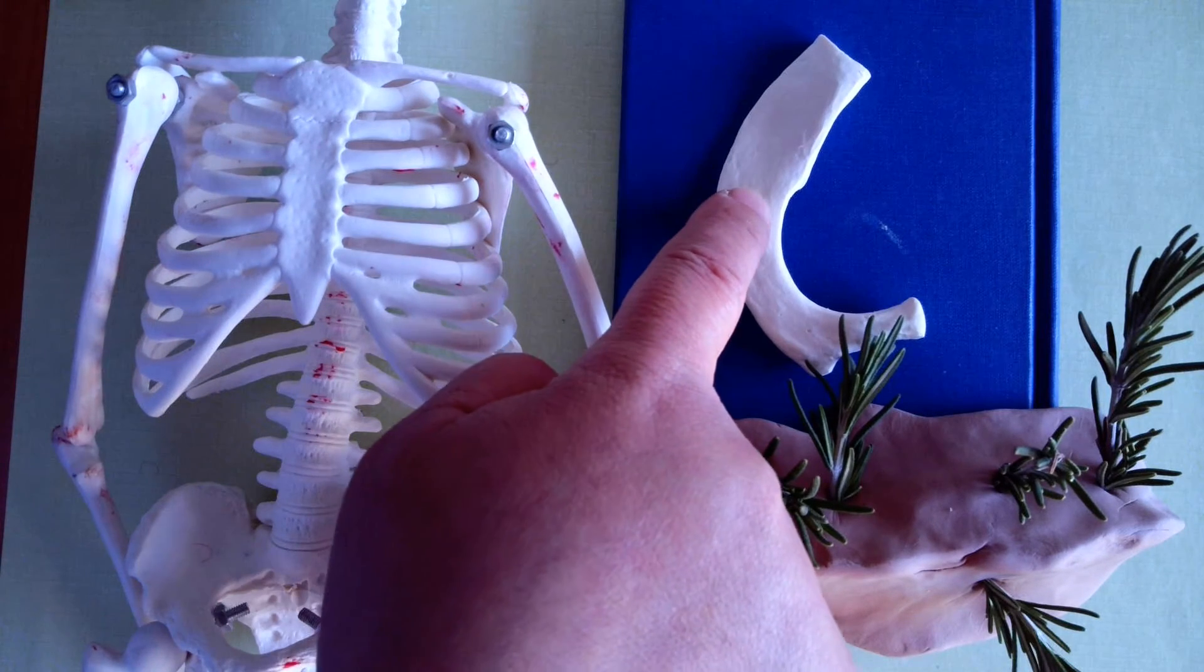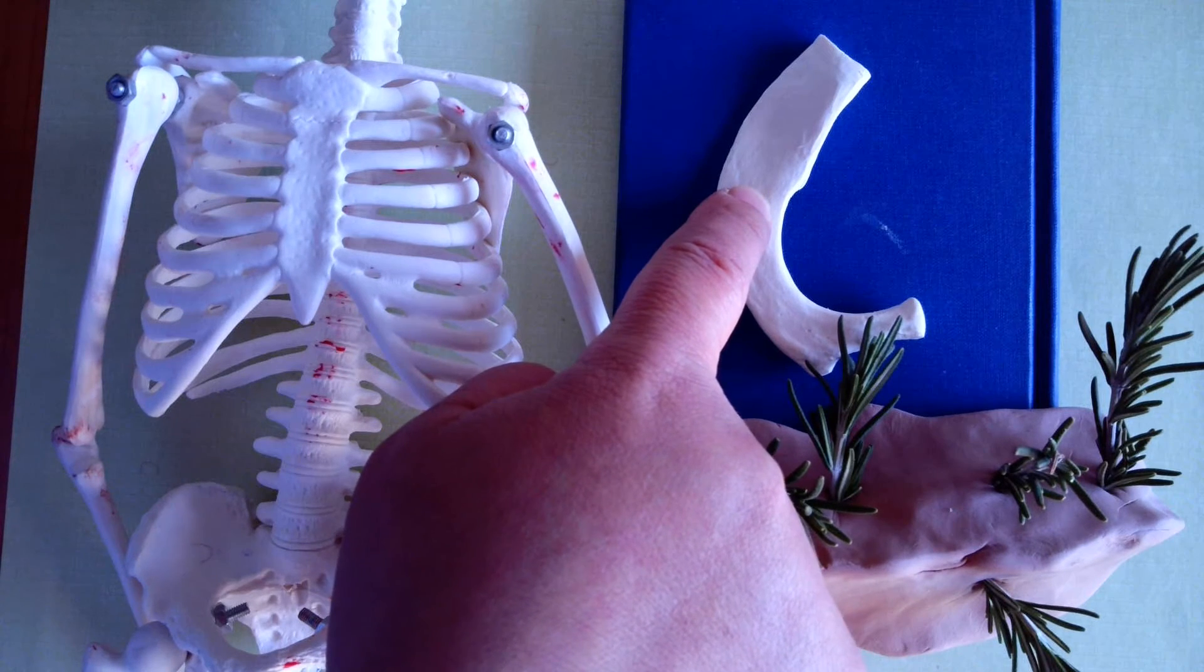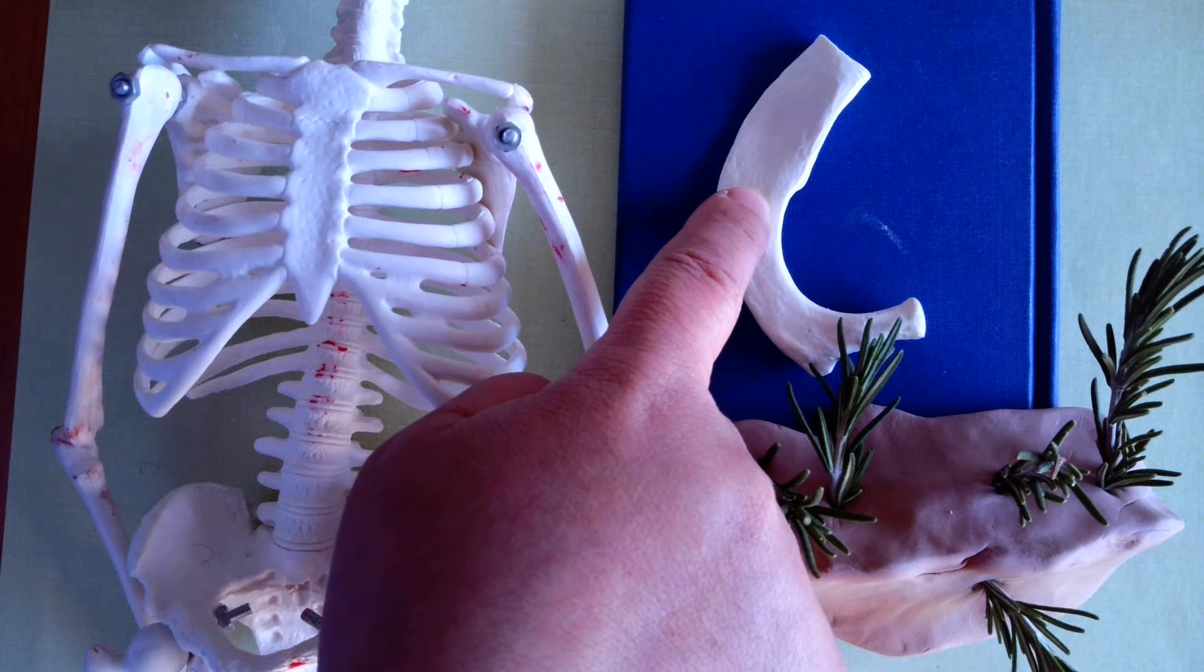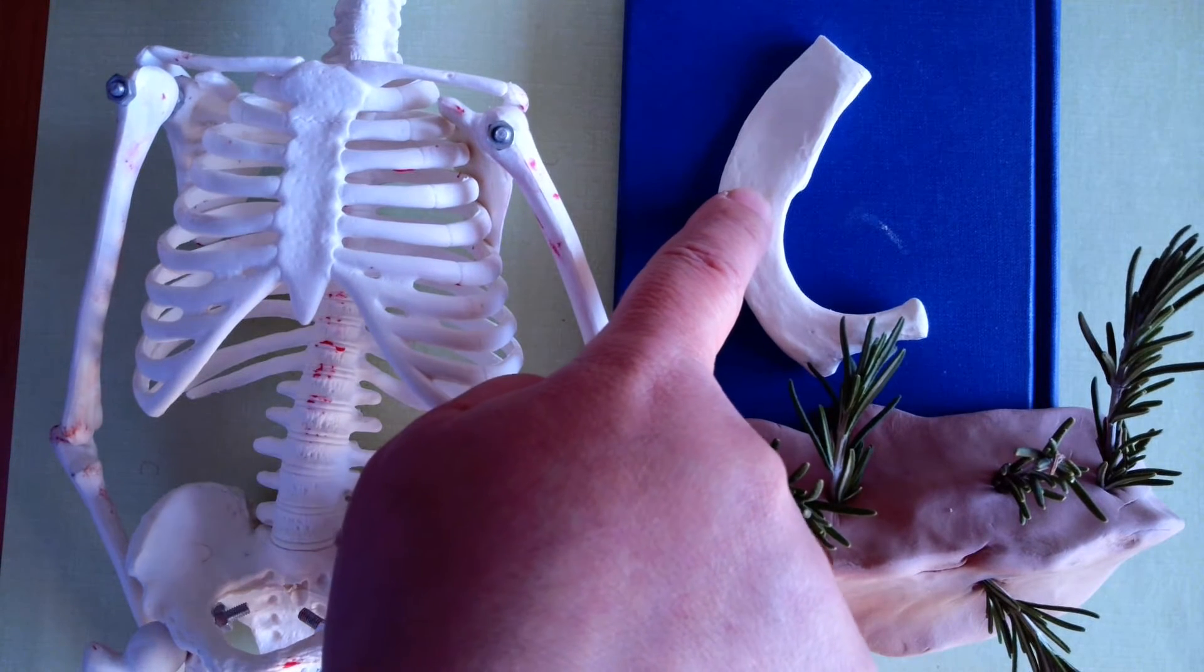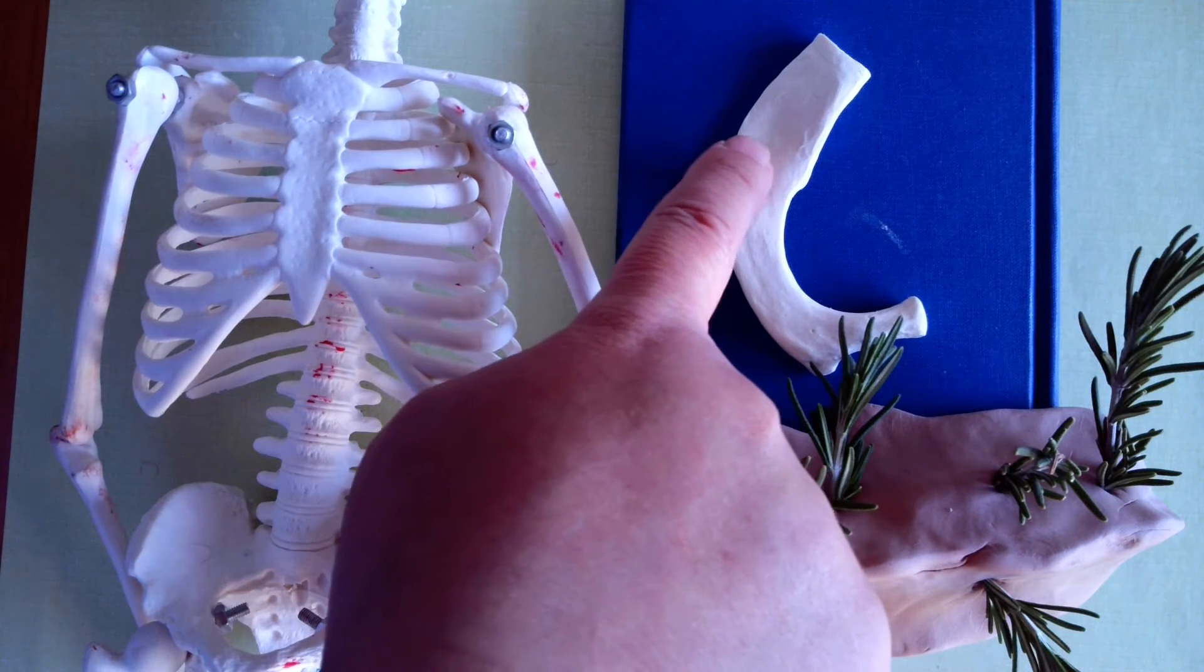So I encourage you to check on your anatomy textbooks and look into the illustrations of the superior surface of the first rib. So there's a slight ridge here. Very slight. Very faint.